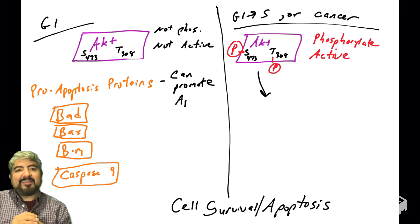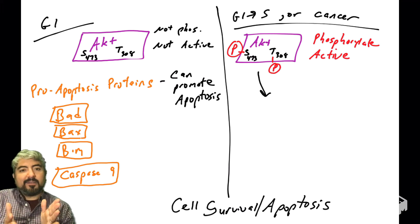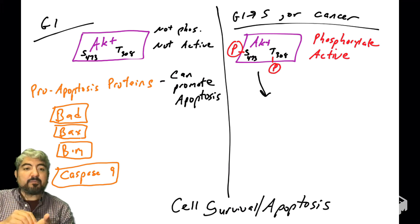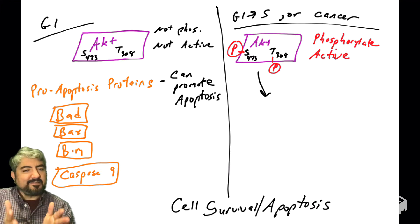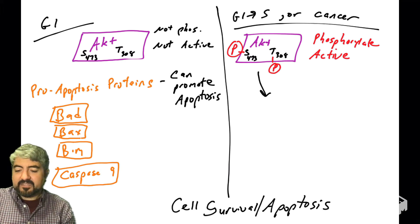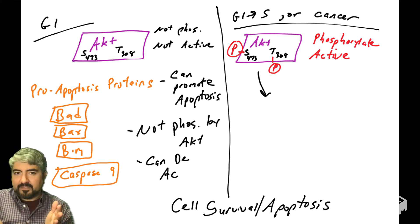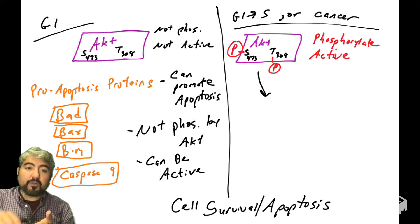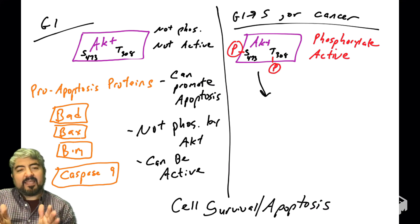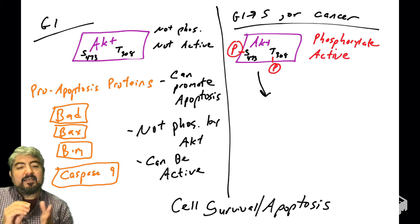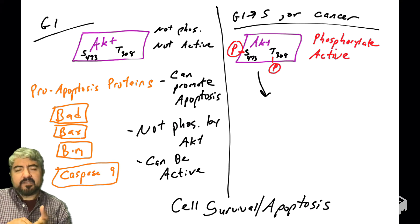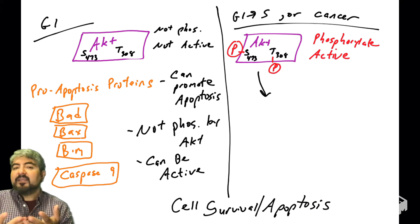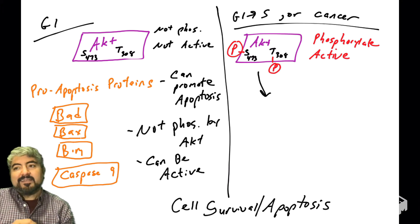In cells that are in G1, AKT is not phosphorylated and therefore not active, so it is not phosphorylating these proteins. When these proteins are not phosphorylated by AKT, they can trigger apoptosis — meaning if an apoptotic signal is received by the cell, if there's some cellular stress, for example, they can activate that apoptotic response.